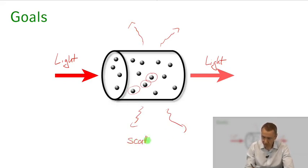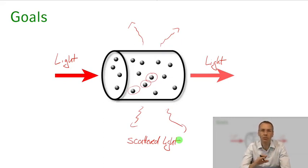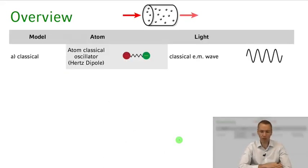We'd like to look at the transmitted light, the scattered light, the atomic response to the light field, and all these things are connected and all of them we'd like to describe within our framework. Now what do we have at our hand? What kind of different models could we make use of?